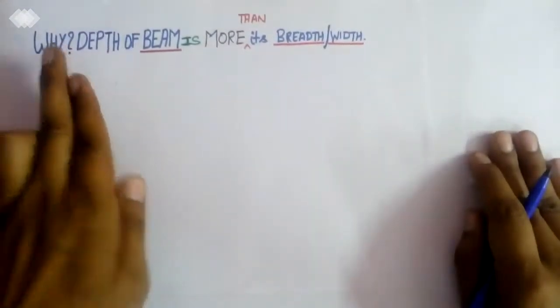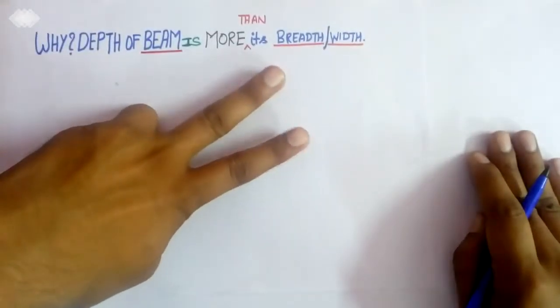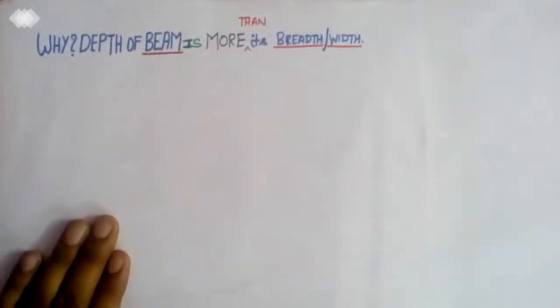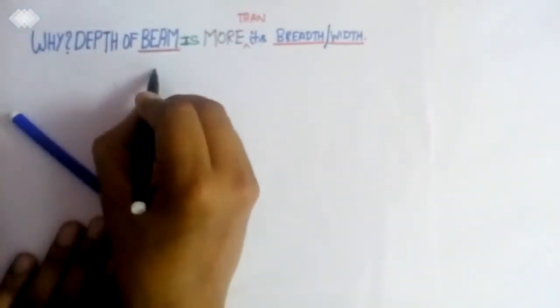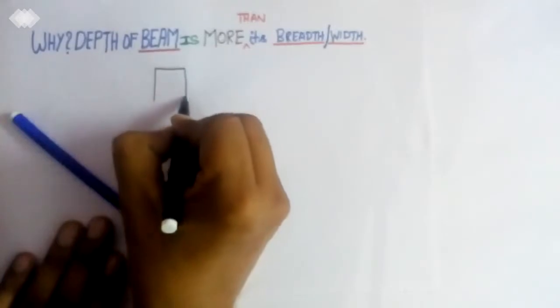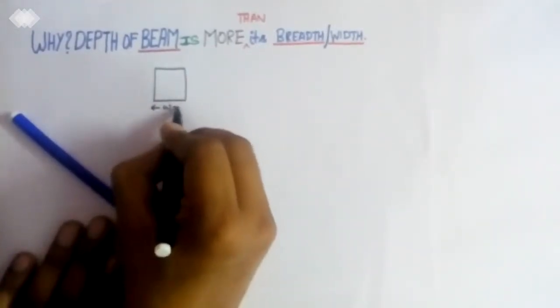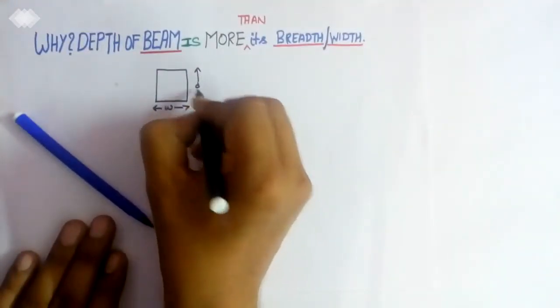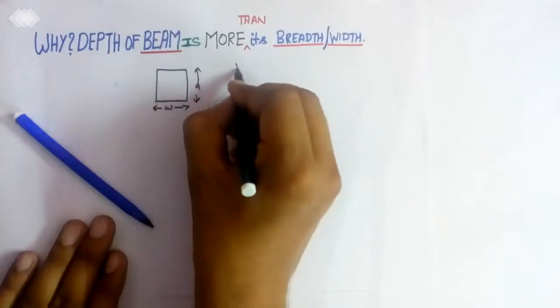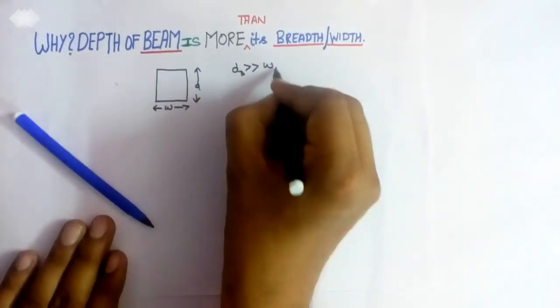Hello friends, I am discussing why depth of beam is more than its breadth or width. To make it clear, I will draw a simple diagram of a rectangular cross section of beam. This will be the width and this will be the depth. The question is why the depth of beam is greater than the width of the beam.